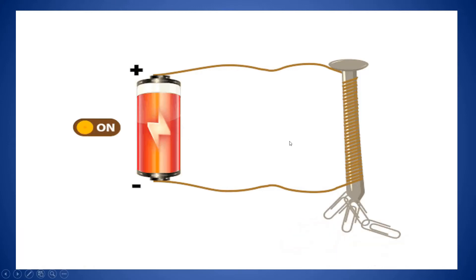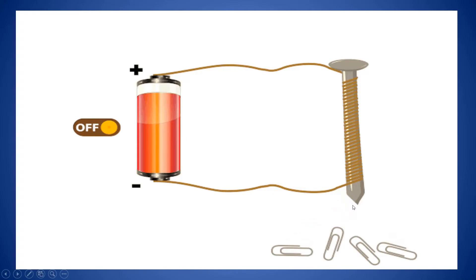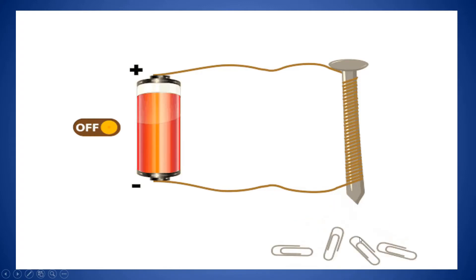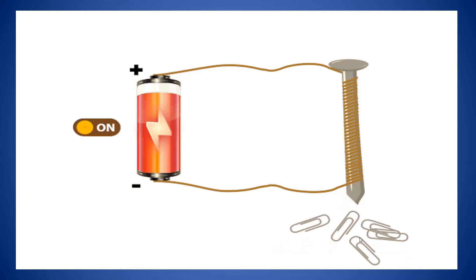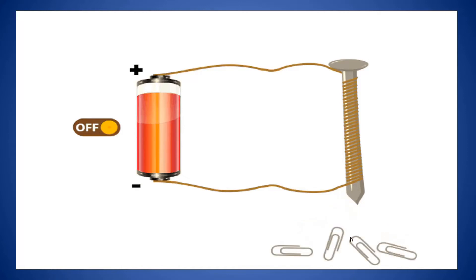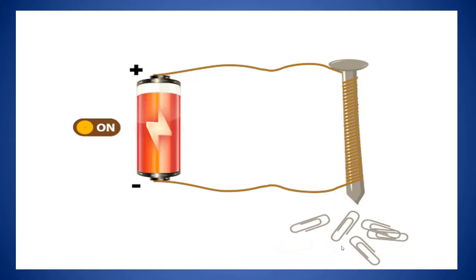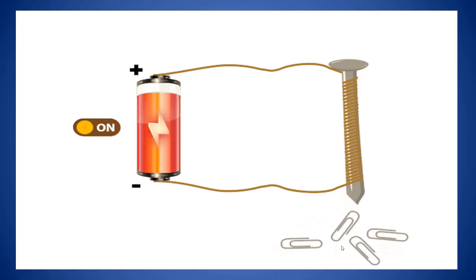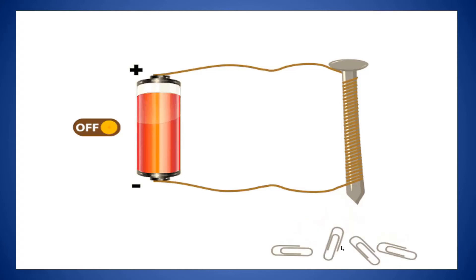When the circuit is on, the electromagnet will attract the pin, and when we switch off the circuit, the iron nail will no longer attract the pin. This shows that when current passes through the circuit, the iron nail behaves like a magnet — this is an electromagnet.